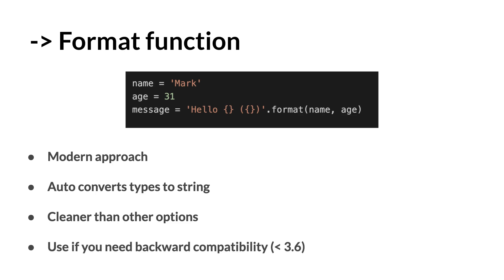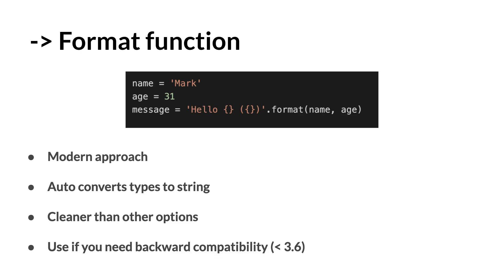I would also use the format function if you need backwards compatibility, because this feature was made to be backward compatible with versions before the one it was added in. It was initially added in Python 3.6, but the developers then added an update to previous versions of Python as well, making it backwards compatible with earlier versions.